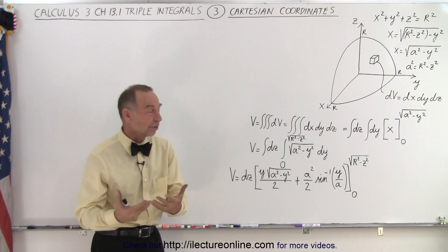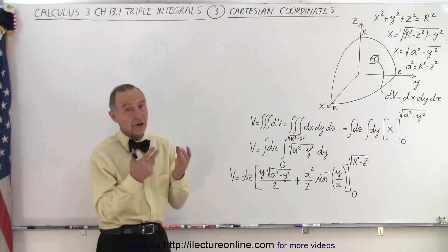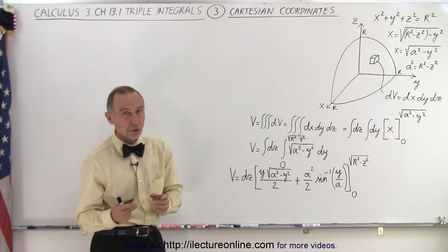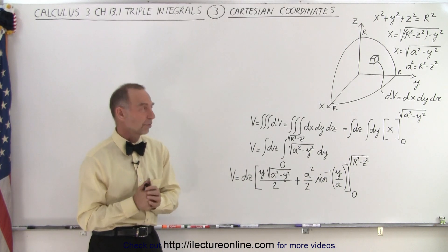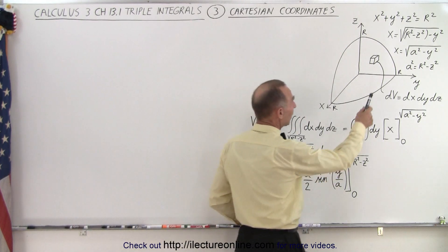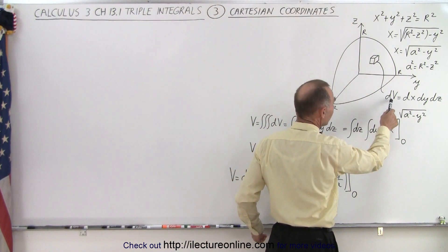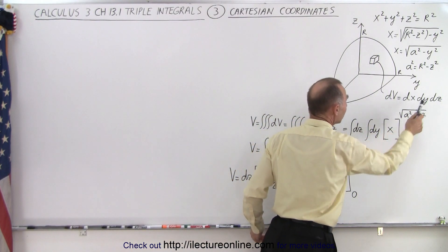But let's go to the process of how we would find the volume of a spherical shaped object using Cartesian coordinate systems. So in that respect, the volume element dv is simply dx dy dz.